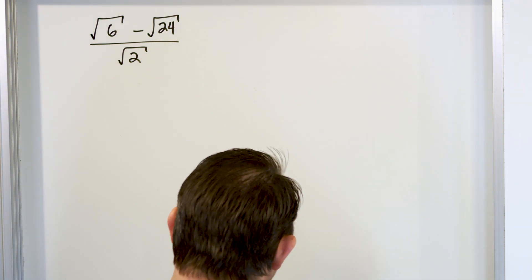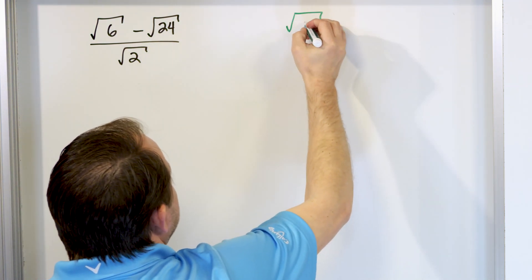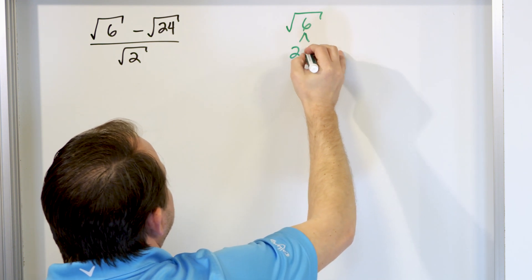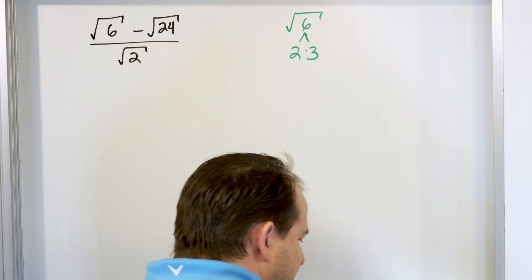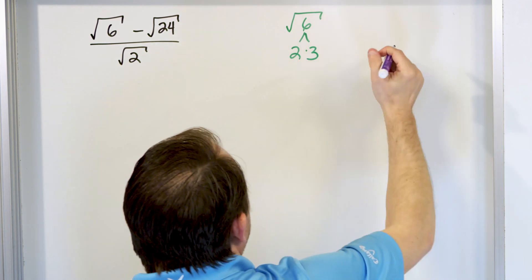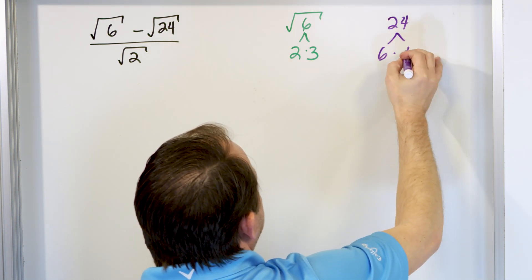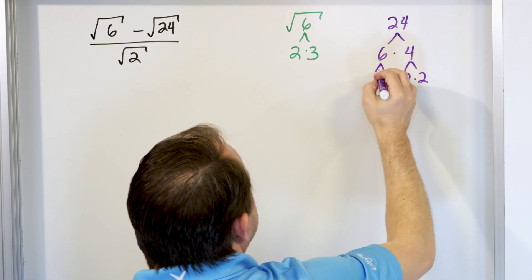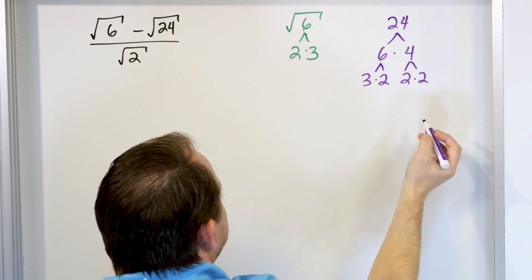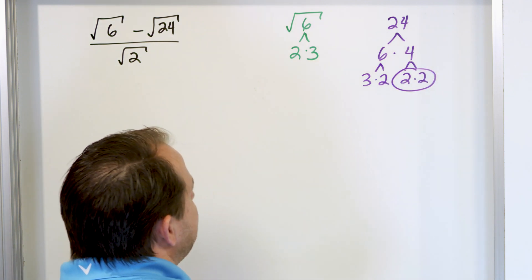Alright. The square root of 6 is not going to simplify any more because 6 is 2 times 3 and there's no pairs there. But we can take a look at 24 and hopefully we'll get lucky here. So 24 is 6 times 4, 4 is 2 times 2, and 6 is 3 times 2. I'm looking for pairs because it's a square root. I have a pair there.